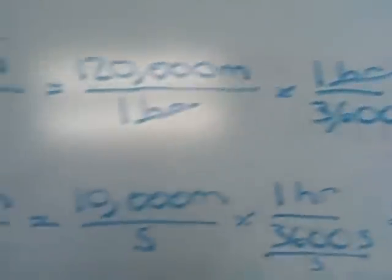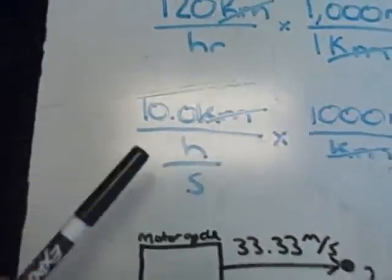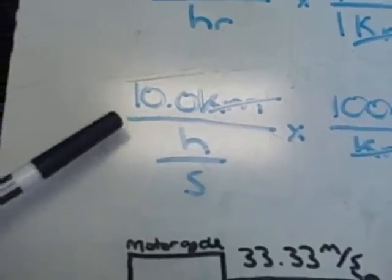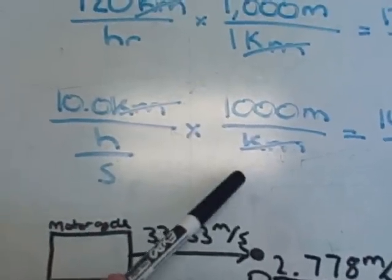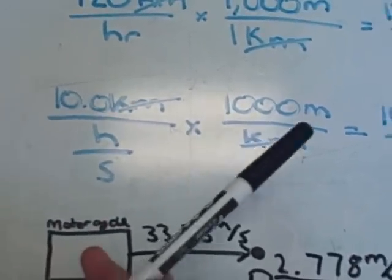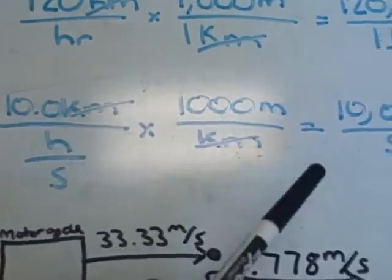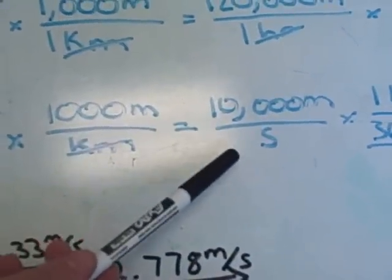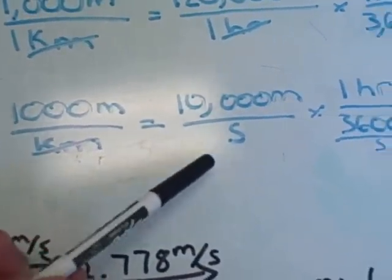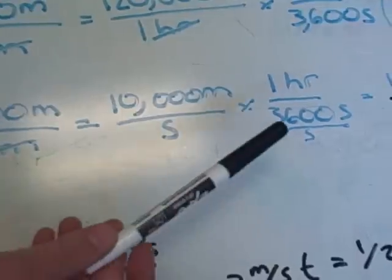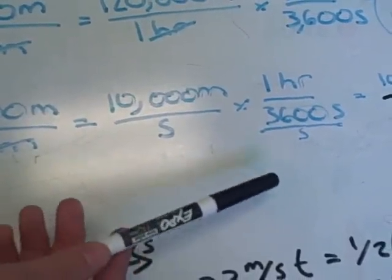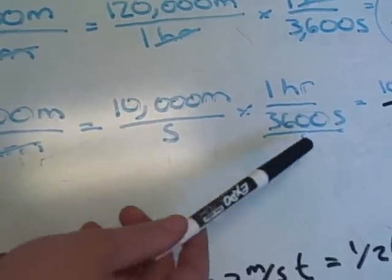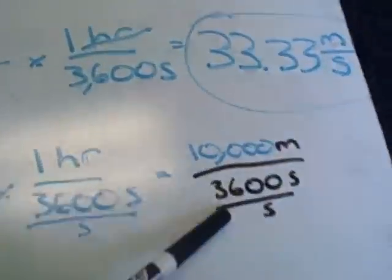The next step to find the acceleration: you take your initial 10 kilometers per hour per second, multiply by 1,000 meters per kilometer, because there are 1,000 meters in a kilometer, leaving you with 10,000 meters per hour per second. Then, just like before, you multiply by 1 over 3,600 to cancel out the hours and leave you with seconds, which gives you 2.778 meters per second squared.